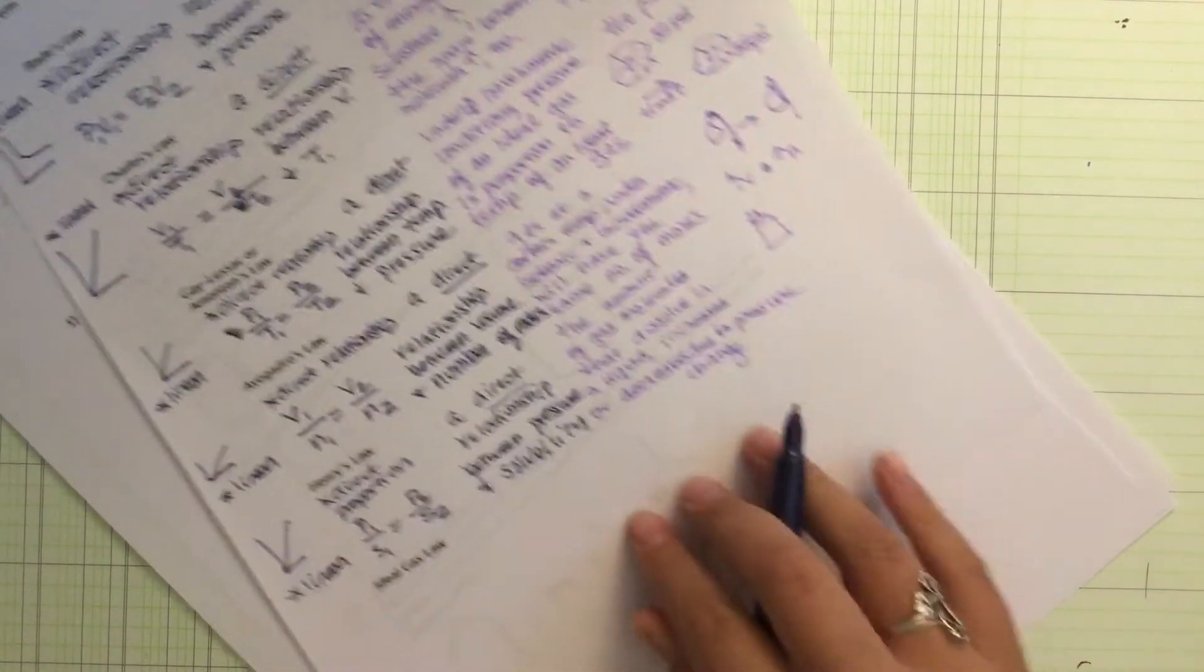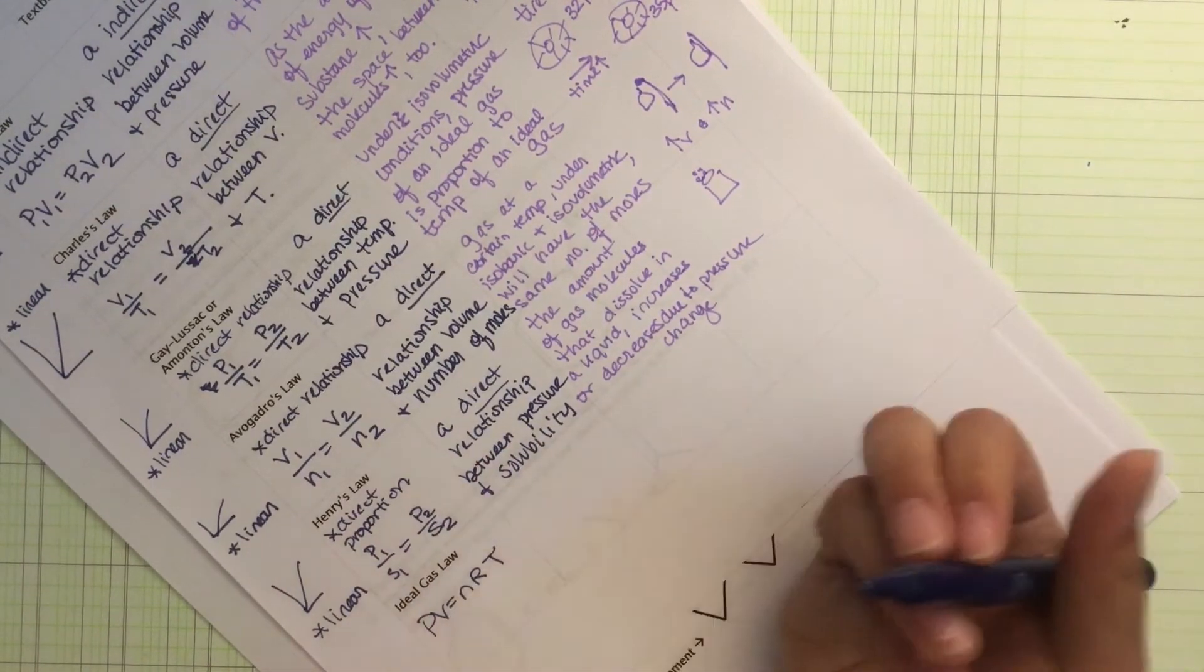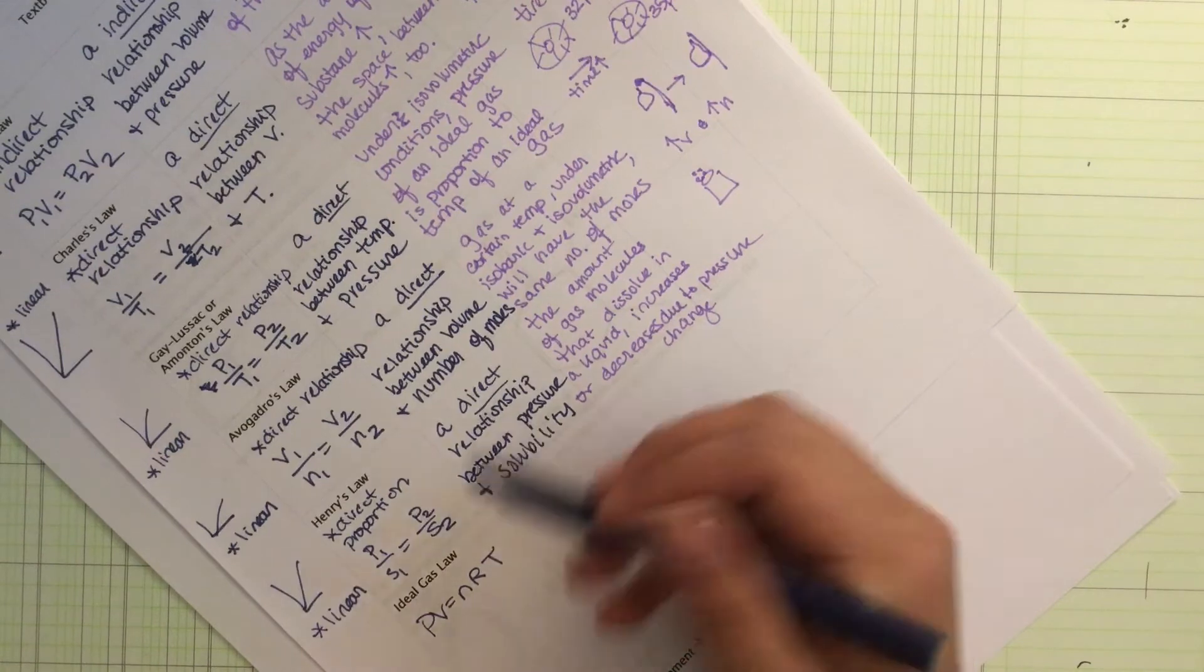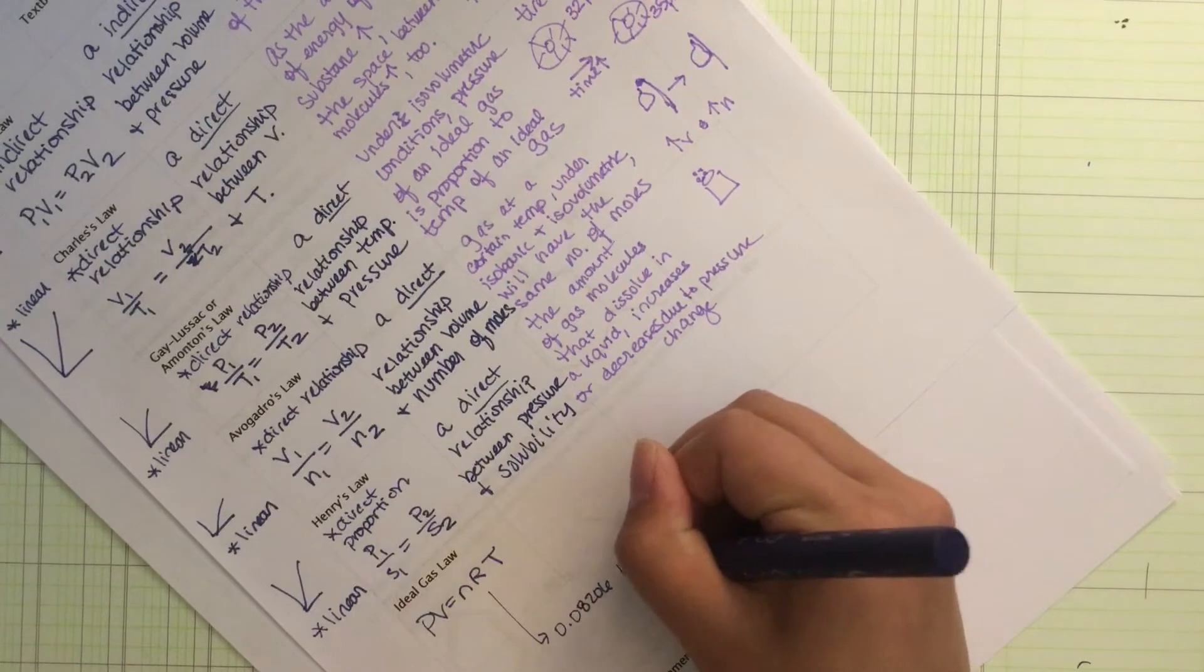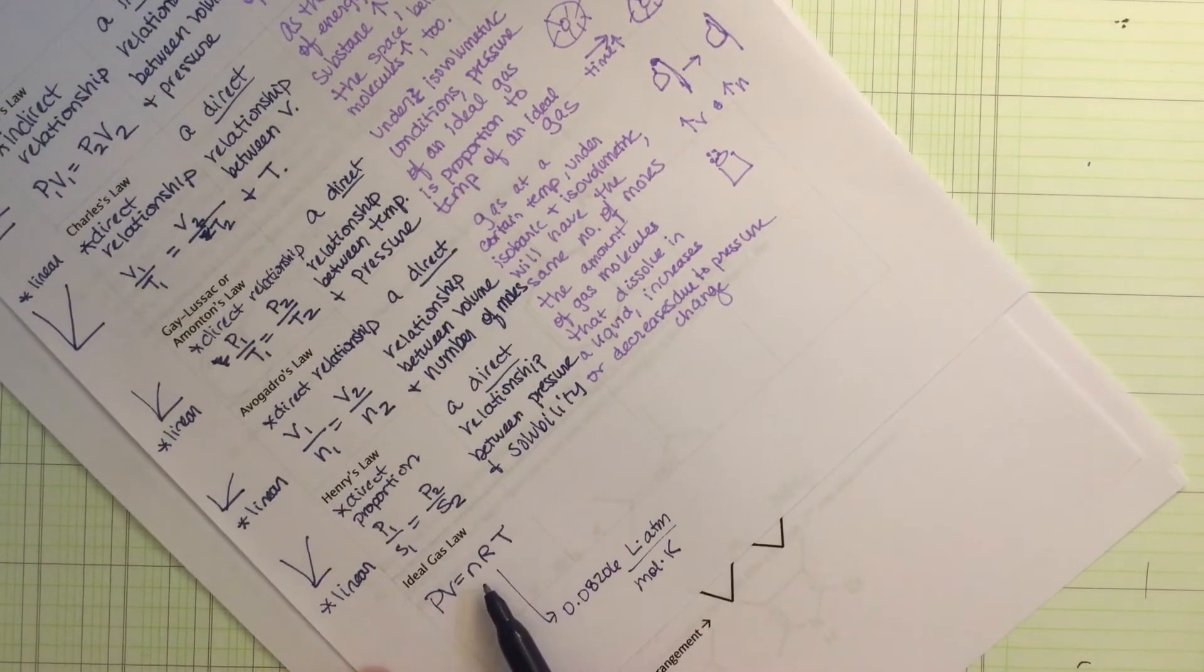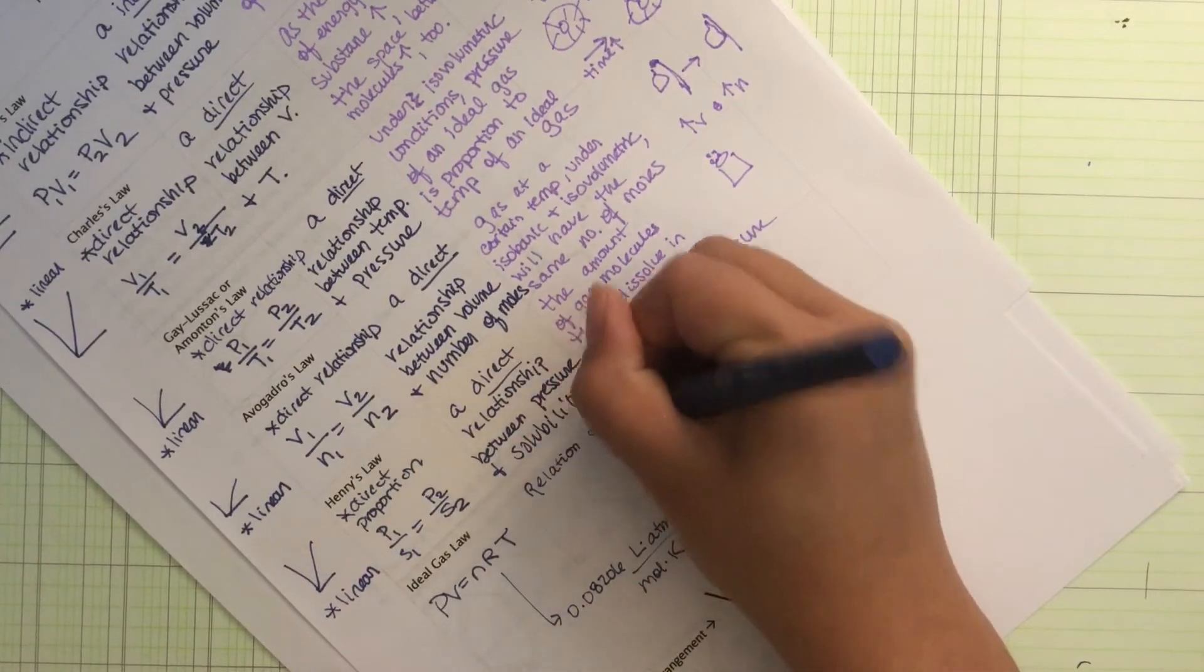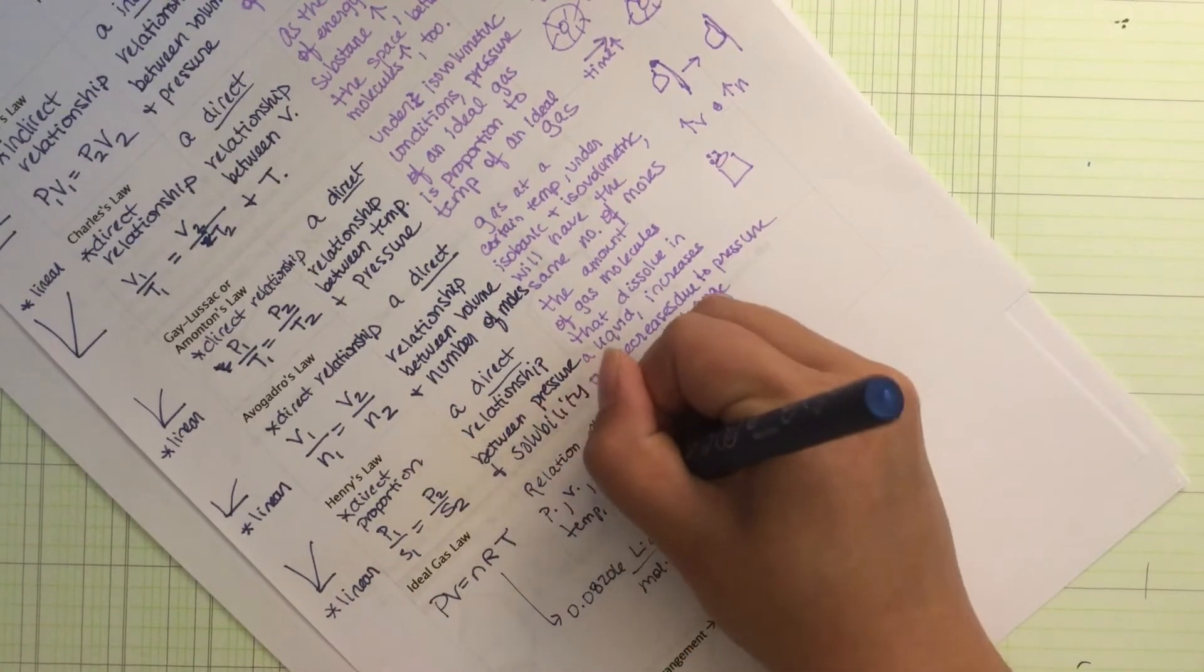Now the last one is the ideal gas law. PV equals nRT. P being pressure. Volume being V. N being the number of moles. R being our constant. And T being our temperature. And let's take a look at this constant. 0.08206 when we're in L ATM over moles Kelvin. This is a relation of pressure, volume, number of moles, and temperature, all related to gas.